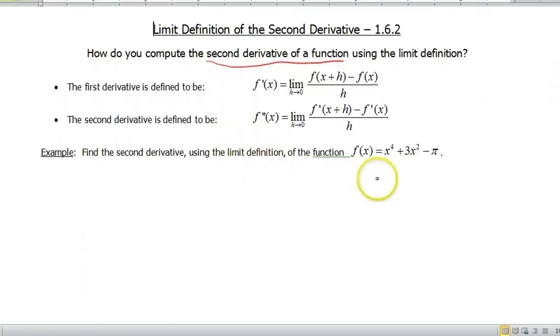So if we're given a function x to the fourth plus 3x squared minus pi, I want to find the first derivative, obviously first, of this function before we can find the second derivative. So it's kind of like, you know, you gotta put your socks on before you put your shoes on.